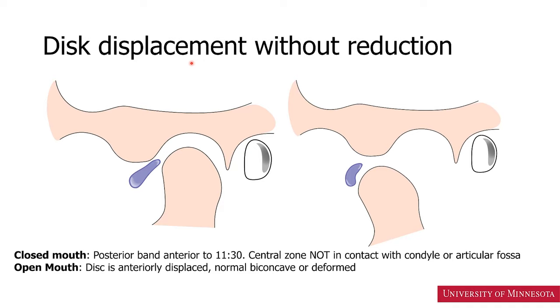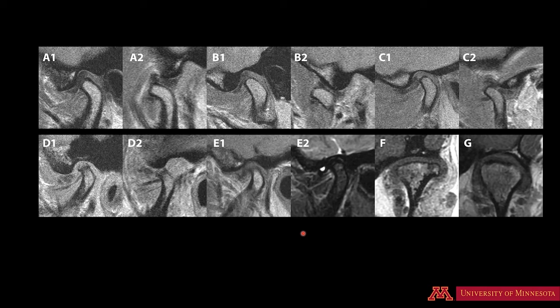In case of disc displacement without reduction, the disc is anteriorly displaced. The disc could have a normal biconcave shape or could be deformed. It could be anteriorly located in front of the condyle, in front of the articular eminence, or in front of the articular fossa. Let's review this MRI series to see different relationships.